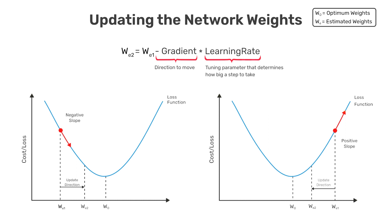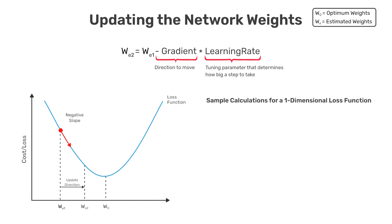To make this a little more concrete, let's take a look at the plot on the left and do a sample calculation for updating the weight. Here, let's assume that the current weight is referred to as WE1, which has a value of 0.38. And we'll also assume that we have a learning rate of 0.01, and that the slope of the loss function at the point WE1 is equal to minus 0.55.